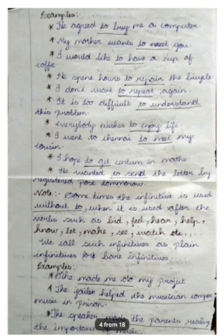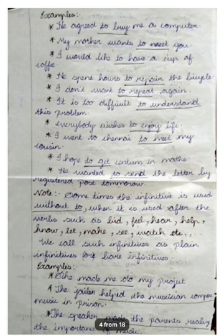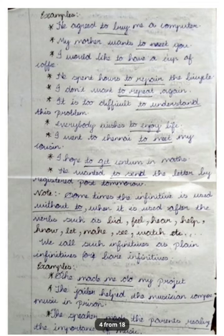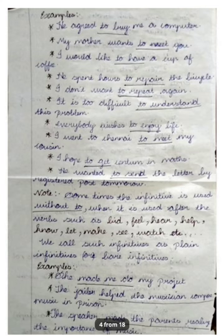'She made me do my project' — 'made' is the finite verb; 'to do' has the 'to' hidden. 'The jailer helped the musician compose music in prison' — 'helped' is the finite verb; 'to compose' has 'to' hidden. This is called a bare infinitive or plain infinitive.